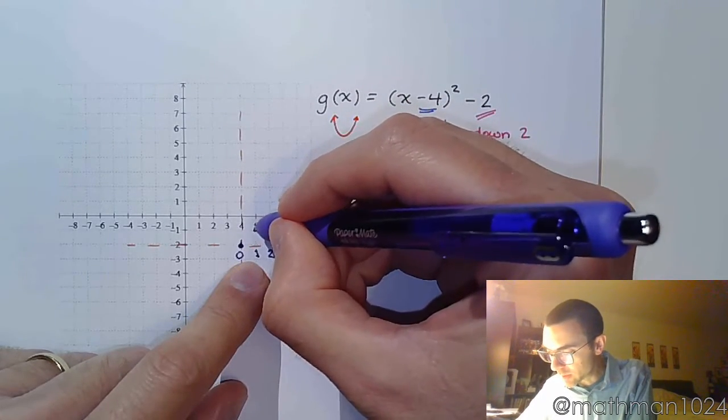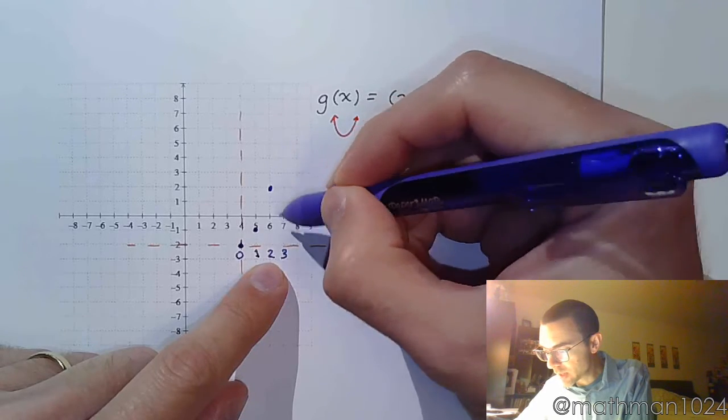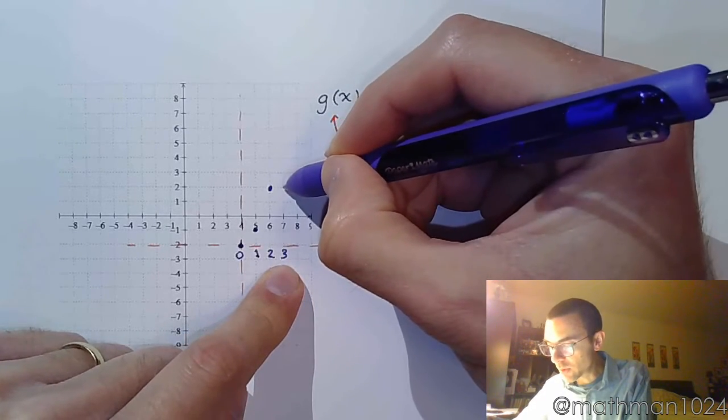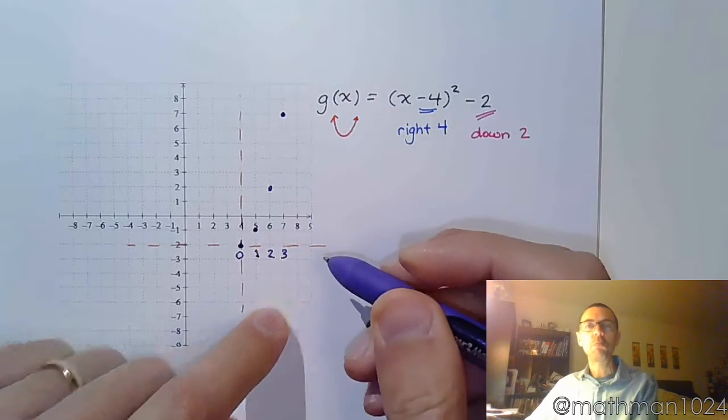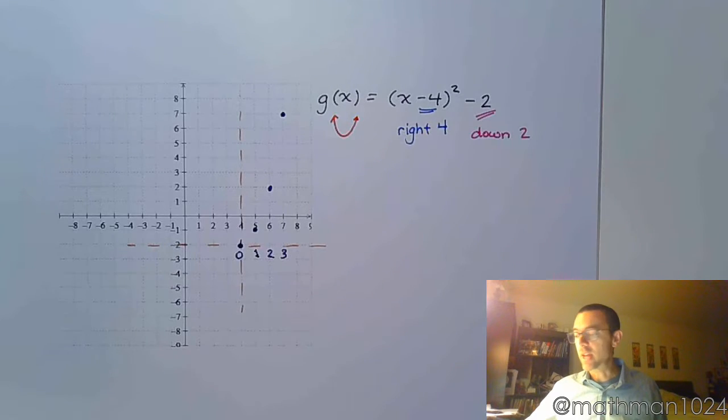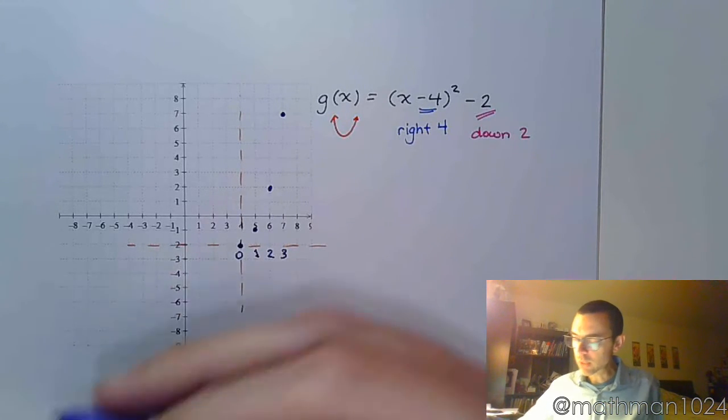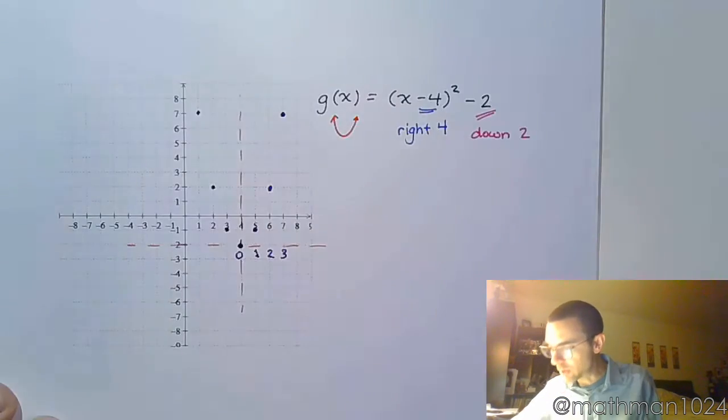1 squared is 1, 2 squared is 4, so 1, 2, 3, 4. 3 squared is 9, so this was 4, 5, 6, 7, 8, and 9. Whenever you are measuring these guys, you're measuring them from that new baseline, that new x-axis that I have dashed out. Now, knowing how the properties of parabolas work, I can copy these points over here, like so.